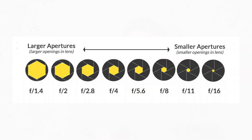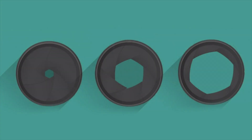The iris is an adjustable opening known as the aperture — the opening inside the lens which controls the amount of light coming through the lens to the film or image sensor. The light inside the lens is controlled by the diaphragm, which is essentially a set of metal plates or leaves that open and close to make a larger or smaller hole.